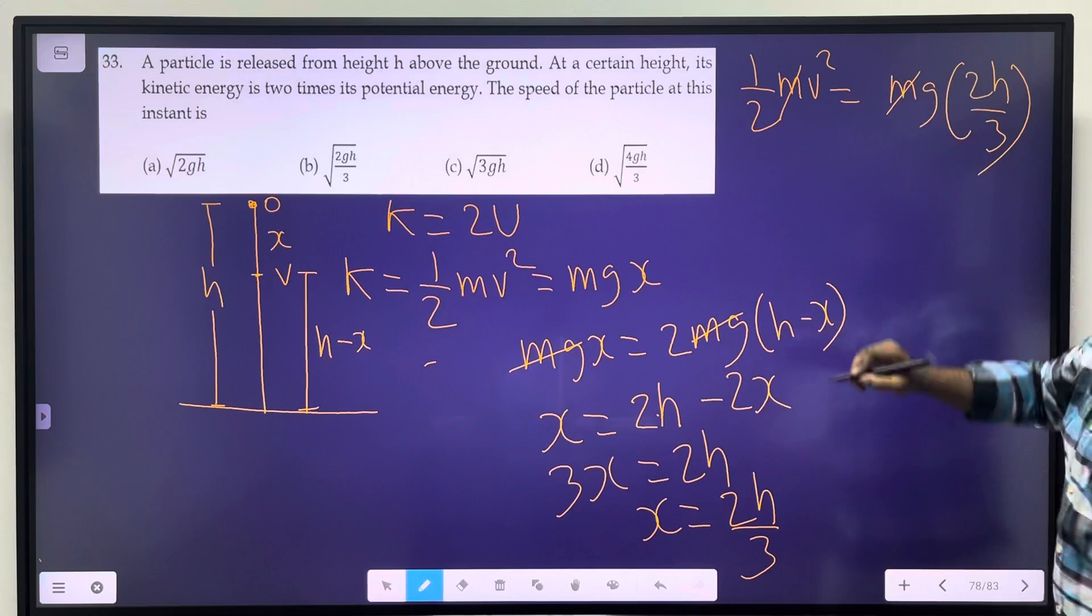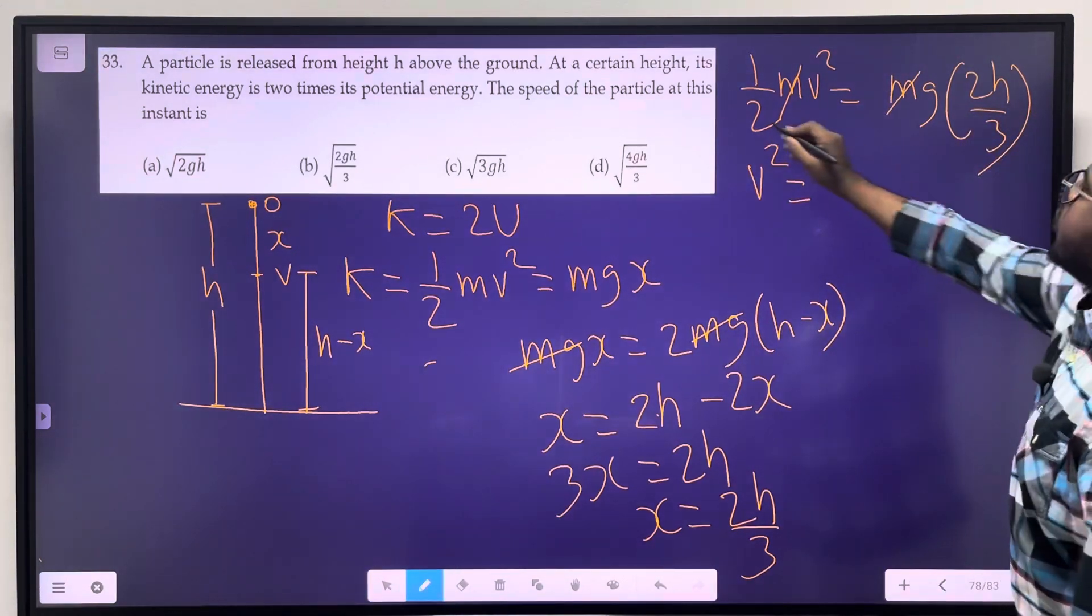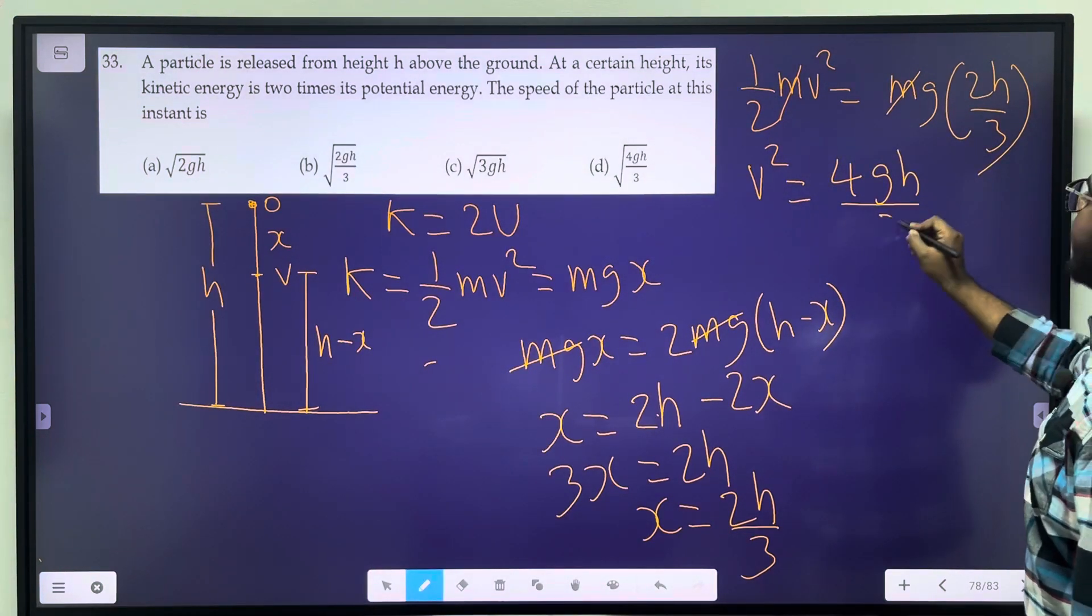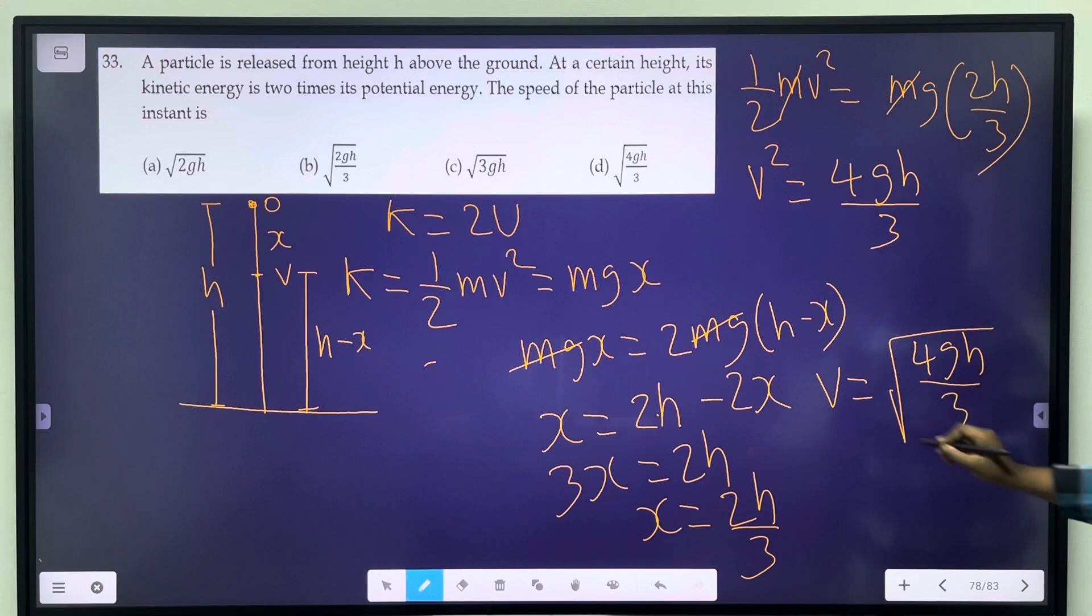m cancels. So v² equals 2 times 2, which is 4gh divided by 3. Taking the square root, v equals square root of 4gh divided by 3.